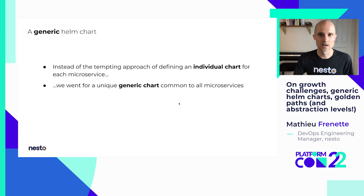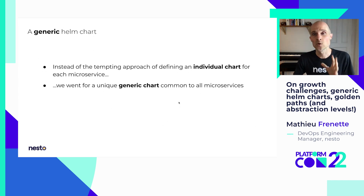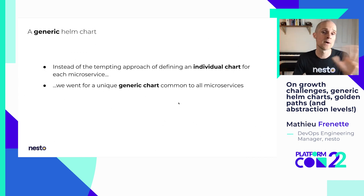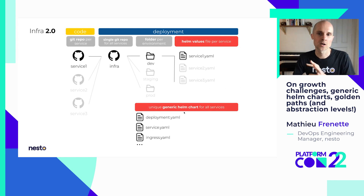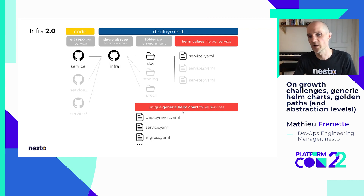We could have gone with creating an individual chart for each microservice, but that was not enough for us. We really wanted one unique chart that would be shared across all microservices, no matter the kind of microservice, no matter what they were doing. That was a big challenge. It required considerable effort because we needed to figure out the patterns that were common to all those services — what was common and what was different, what was just boilerplate, and what were significant configuration values — and extract them into that unique and generic Helm chart in a way that's usable and sensible.